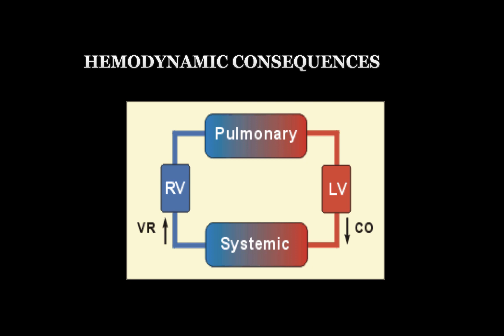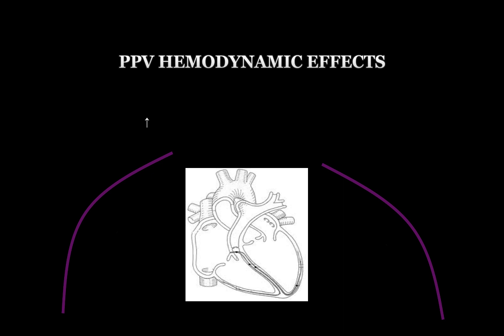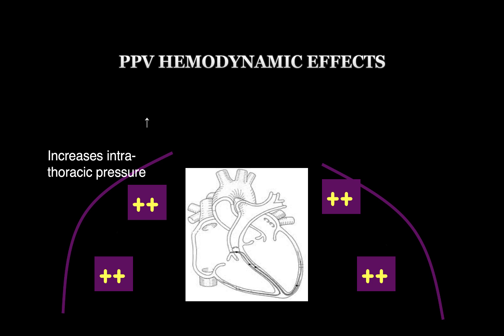The effect of positive pressure ventilation decreasing venous return and preload is amplified when a patient is already intravascularly deplete — a common factor in critically ill patients. These patients may need a fluid bolus to restore intravascular volume and improve preload. This side effect of positive pressure ventilation is typically more pronounced when a patient is intravascularly deplete and not a major factor in patients who are intravascularly replete.